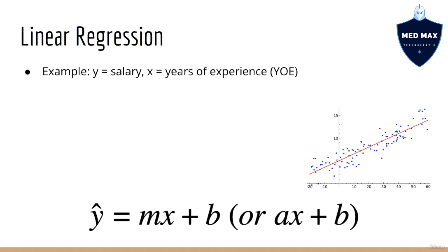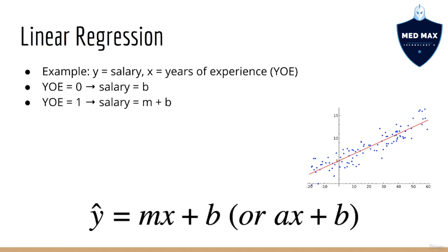Let's try to play around with this equation a little bit and see what happens. We know that b, the y-intercept, is the value of y-hat when x equals zero. So in other words, if you have zero years of experience, this would be your salary, b. If x equals one, that means you have one year of experience, and then your salary would be m plus b. If x equals two, that means you have two years of experience, and then your salary would be 2m plus b. In other words, m is the increase in salary that you get for each additional year of experience.